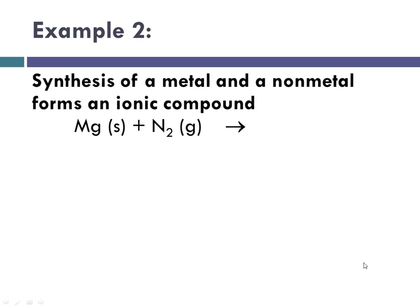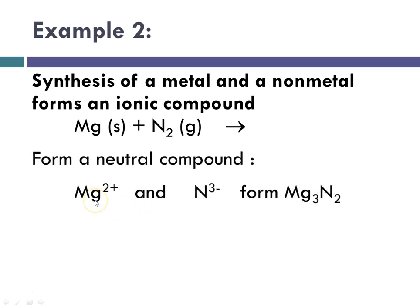Example 2. Synthesis of a metal and a nonmetal forms an ionic compound. And again, in this case, our nonmetal doesn't happen to be oxygen. So we have to form a neutral compound, which means we have to remember that magnesium is a group 2 metal, so its ion will be plus 2.